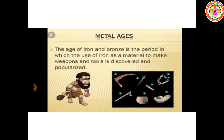Next came the Metal age. Stone age was followed by metal age. When people discovered how to use metals, the earliest part of this period is called the Chalcolithic age, or Copper age. Copper was used for making tools and weapons. However, copper tools bent easily, so they were not very effective and needed to be polished regularly. The age of Iron and Bronze is the period in which the use of iron as a material to make weapons and tools was discovered and popularized.